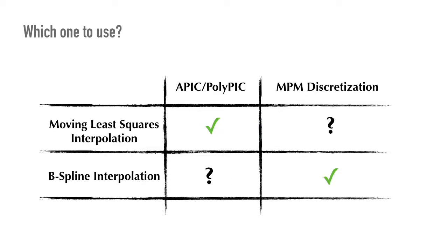So we have two ways to reconstruct a continuous field from discrete grid samples: moving least squares reconstruction for velocity transfer, and B-spline shape kernels for force discretization via the Galerkin weak form. The natural question is: can we use just one single interpolation scheme for both? If we can, we simplify the algorithm, simplify the math, and optimize the code. We started by trying to use B-splines for APIC — reconstructing the velocity field with spline quadratic functions summed up. It turns out that this doesn't bring much advantage; it's hard to compute and breaks angular momentum conservation, causing simulated objects to spin down non-physically as if underwater.